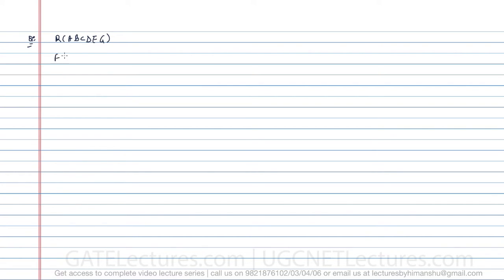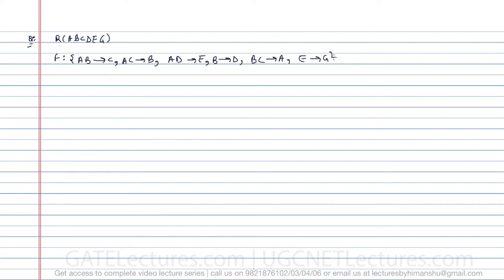The following functional dependencies are given: AB determines C, AC determines B, AD determines E, B determines D, BC determines A, and E determines G.